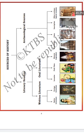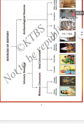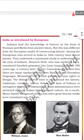So the sources of history are of two parts: literary sources and archaeological sources. Literary sources are further divided into written literature and oral literature. Written literature is divided into native literature and foreign literature. Oral literature includes folk songs, tales, and legends. Archaeological sources include monuments, coins, inscriptions, and other archaeological remains — these are the things we use to write history.